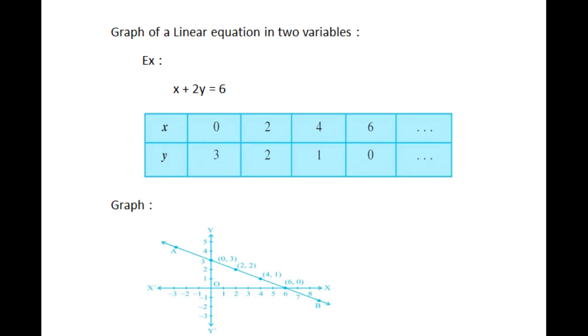Next, graph of a linear equation in two variables. Consider the example x plus 2y equal to 6, which can be expressed in the form of a table as shown in figure by writing the values of y below the corresponding values of x.